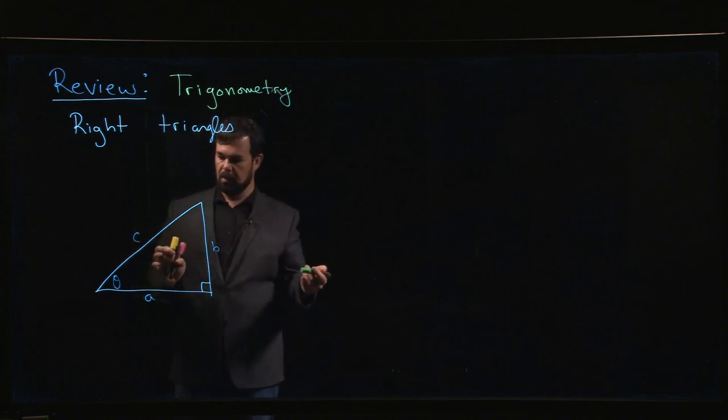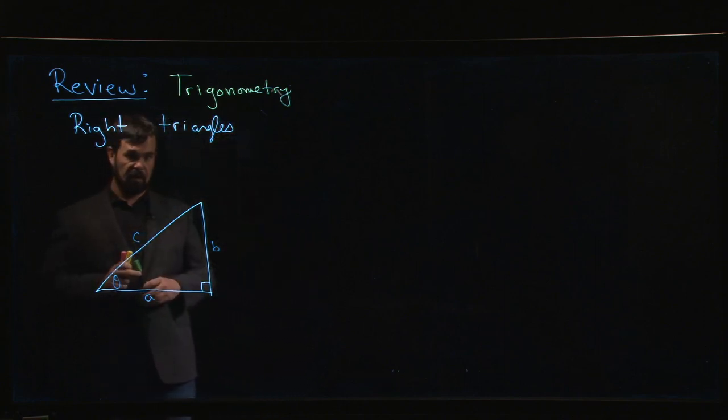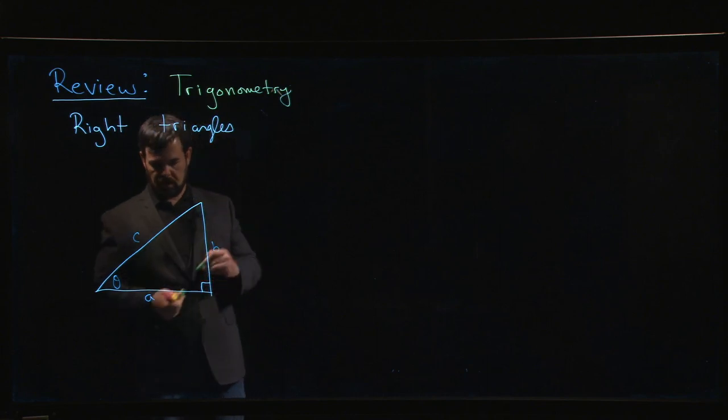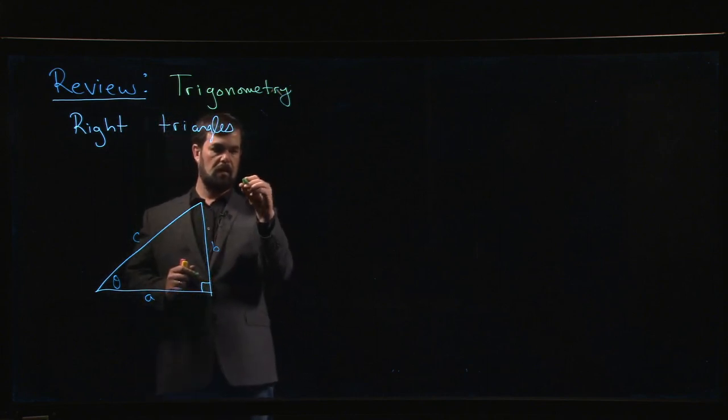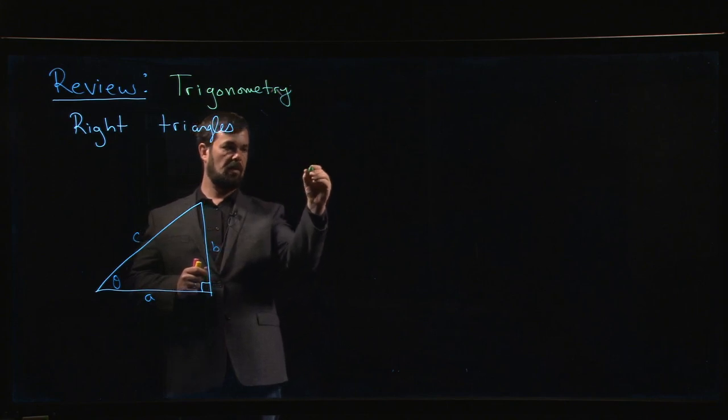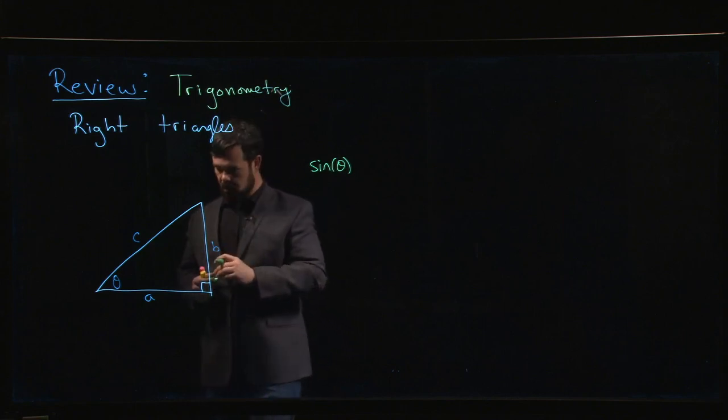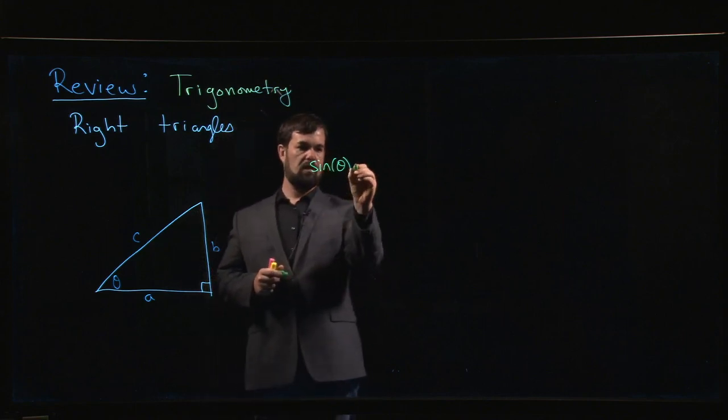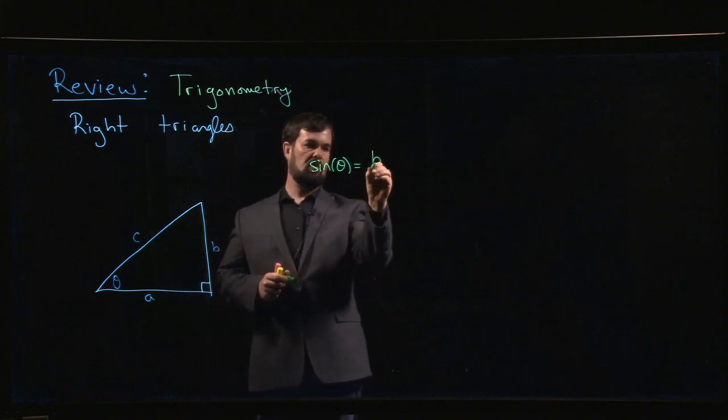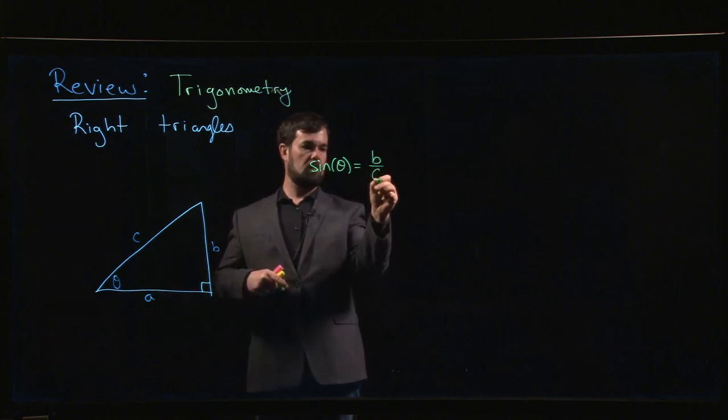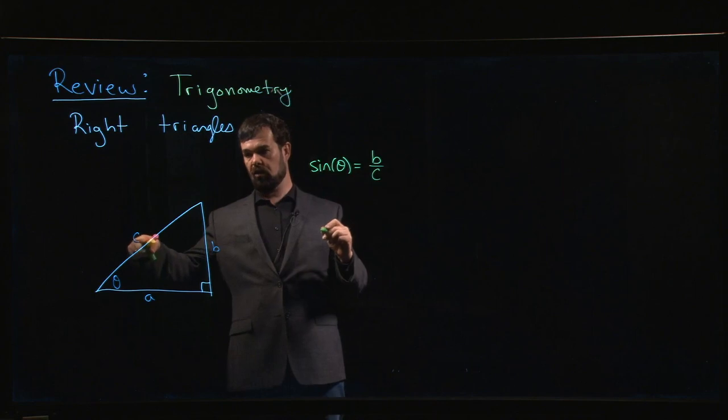And so you probably have seen definitions of trigonometric functions as ratios of the sides of this triangle. So typically what you see is for that given angle there, that interior angle, you see things like sine of theta. And sine of theta is given as the ratio of the side opposite the angle over the long side, which is called the hypotenuse.